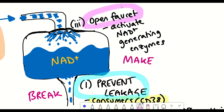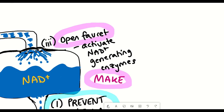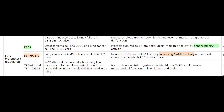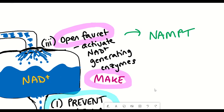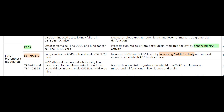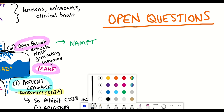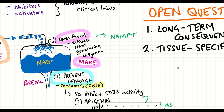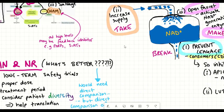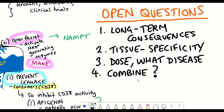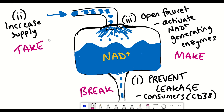The last strategy is to increase NAD+ production by activating the enzymes involved in its biosynthesis. One such enzyme is NAMPT, which converts nicotinamide into NMN. I've highlighted two compounds able to activate this enzyme, though research in this area is still young and it's not clear if these molecules have off-target effects on other pathways. All in all, there are many open questions: whether there are long-term consequences to boosting NAD+ levels, whether supplements have tissue specificity, what the most effective therapeutic dose is, and whether they could be used for age-associated diseases or in combination with other approaches.